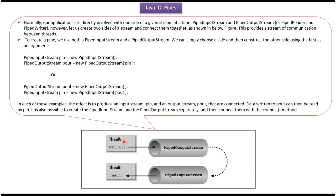One thread can write data to PipedOutputStream. Simultaneously, another thread can read data from PipedInputStream which is connected to PipedOutputStream. Using the connect method, we can connect PipedOutputStream with PipedInputStream.